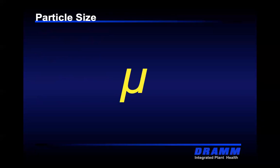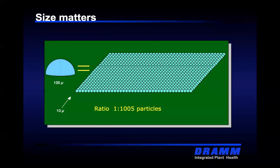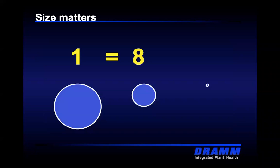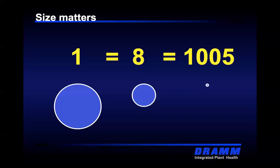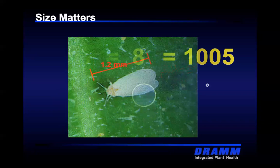Whenever we talk about making applications in the greenhouse or nursery, we use a unit of measure called a micron, which denotes the water particle size coming out of a machine. One 100-micron size water particle is about the width of a human hair. We talk about this because we're talking about surface area. With one 100-micron size droplet, you get a little over a thousand 10-micron size droplets. One 100-micron droplet gives you about eight 40-to-50 micron droplets, and just over a thousand 10-micron droplets.